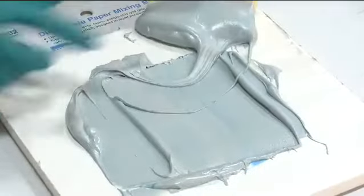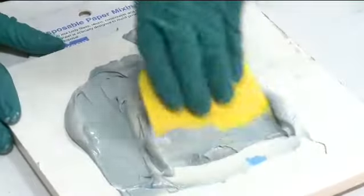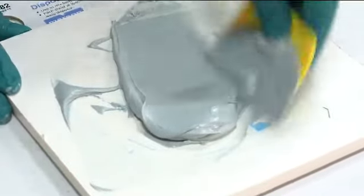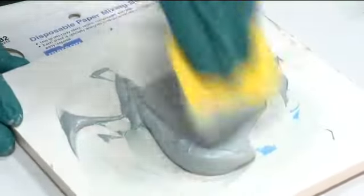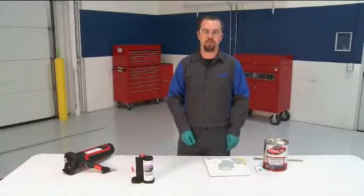Notice the line running through the middle of the filler. This is an area that has not been properly mixed. We'll continue mixing the filler and hardener until a uniform color is achieved and there is no evidence of unmixed body filler or hardener. This body filler is now ready for application.